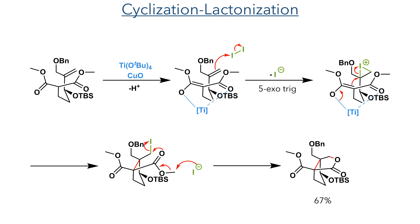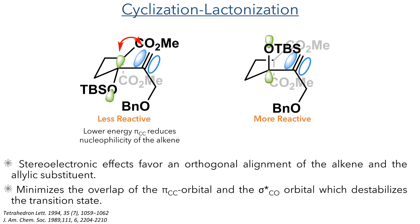Taking this forward, it was then subject to a cyclisation-lactonisation sequence, carried out by reacting it with titanium tetraisopropoxide, copper oxide, and an excess of iodine. The titanium coordinates the two ester groups, promoting enolate formation and adding conformational rigidity. The alkene is activated by iodine forming an iodonium intermediate that undergoes an intramolecular 5-exo-trig cyclisation to form the 5-membered ring. This is followed by a lactonisation reaction most likely triggered by the attack of iodide on the methyl ester, leading to intramolecular nucleophilic attack to form the lactone in a 67% yield as a single diastereomer.